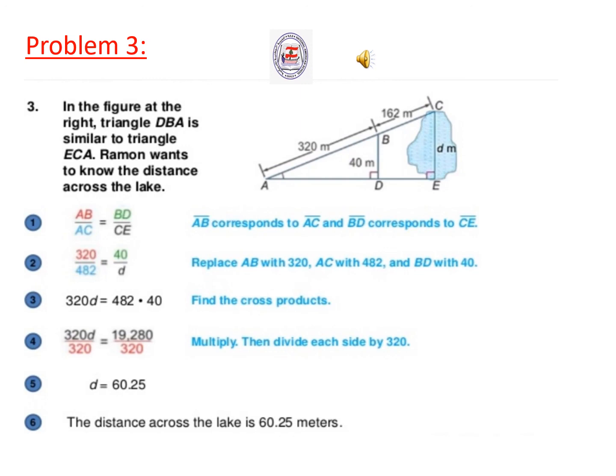320d equals 19,280. Multiply, then we divide each side by 320. D equals 60.25. So the distance across the lake is 60.25 meters.